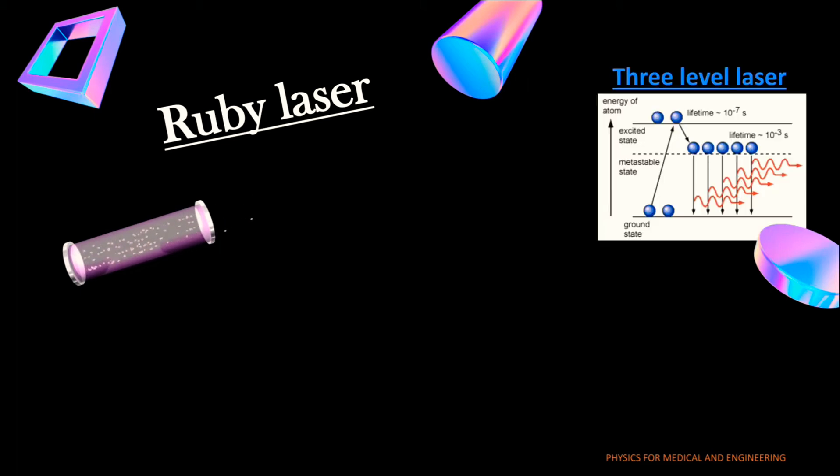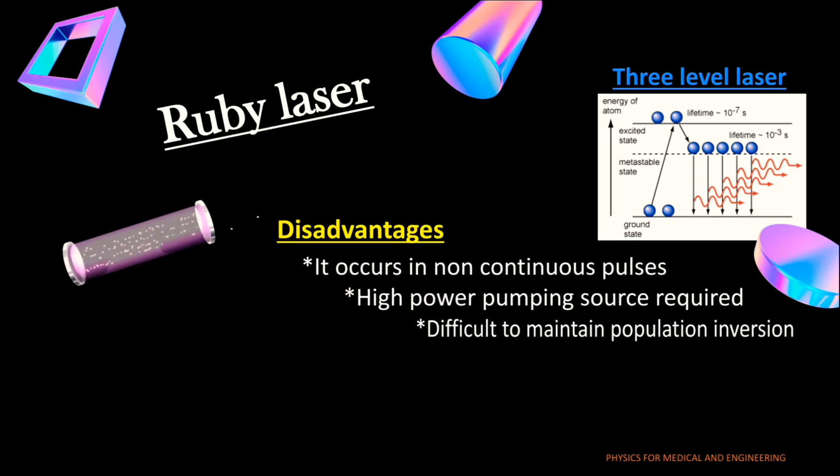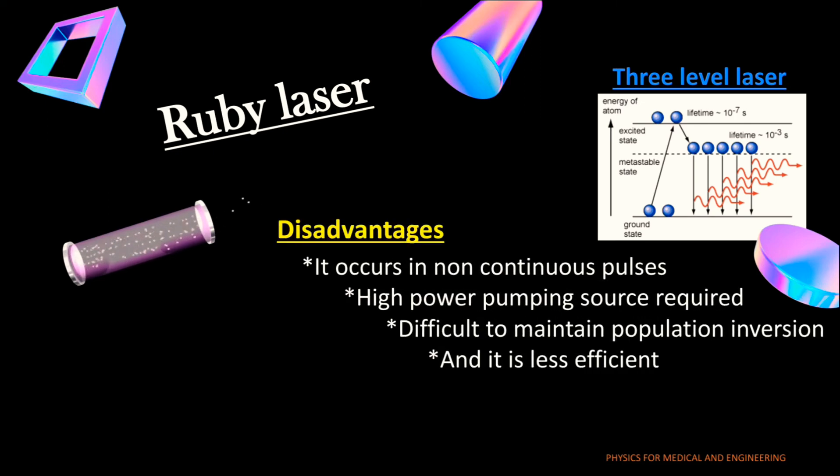Ruby laser is also known as three level laser. The main disadvantages of this three level laser are it occurs in non-continuous pulses, it requires high power pumping source, difficult to maintain population inversion, and it is less efficient.